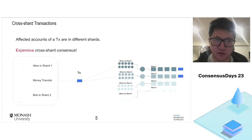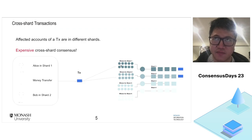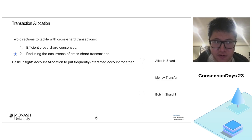There is a big concern called cross-shard transactions. For example, a transaction may not go to only one shard. If this transaction represents Alice in shard 1 wanting to make a money transfer to Bob in shard 2, this transaction needs to be processed in both shard 1 and shard 2. We call it a cross-shard transaction, and it's very expensive to process because communication between both shards is required to achieve inter-shard consensus.